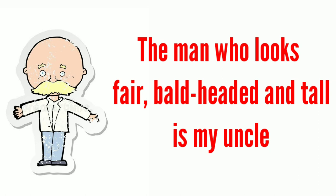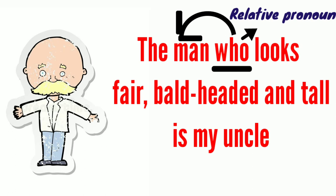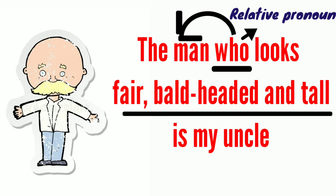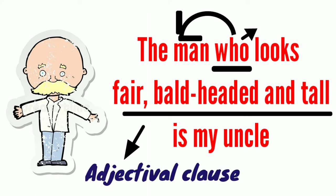Look at this example: 'The man who looks fair, bald-headed, tall is my uncle.' In this sentence, 'who' is a pronoun relating the characteristics to that man, so it is called a relative pronoun. The words fair, bald-headed, and tall are the characteristics of that particular person, so these are called adjectives. Therefore, this sentence can be called an adjectival clause.